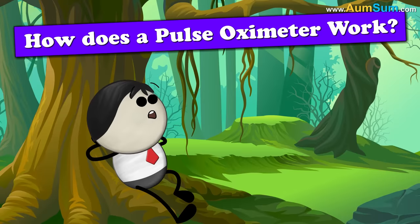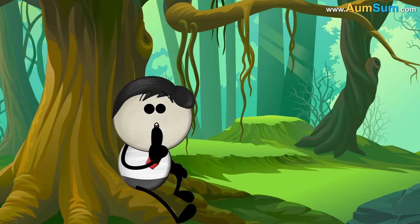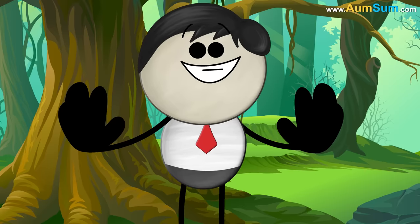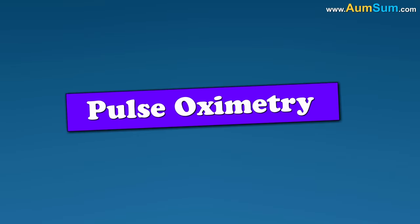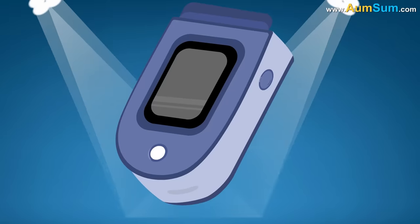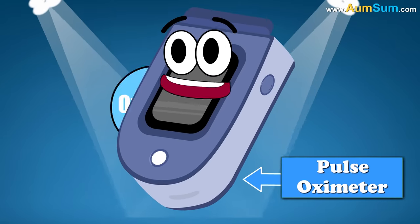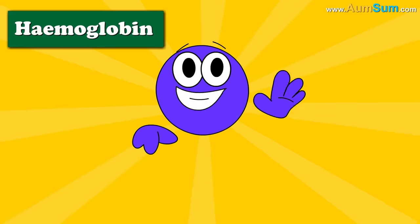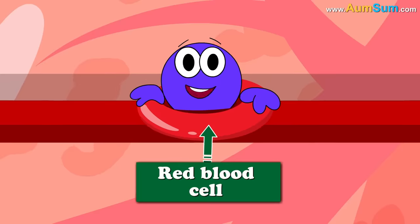How does a pulse oximeter work? Shhh. It is a secret. Oh, AumSum. Pulse oximetry is a test carried out using a pulse oximeter. This test is used to measure the oxygen level in our blood. Hemoglobin is a protein present in our red blood cells. It transports oxygen from lungs to cells in our body.